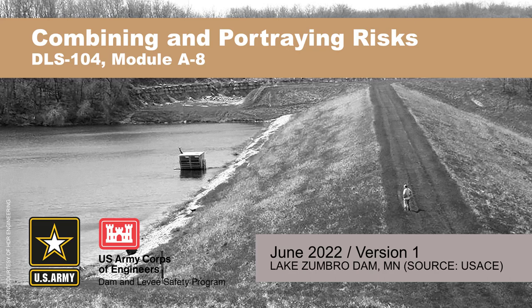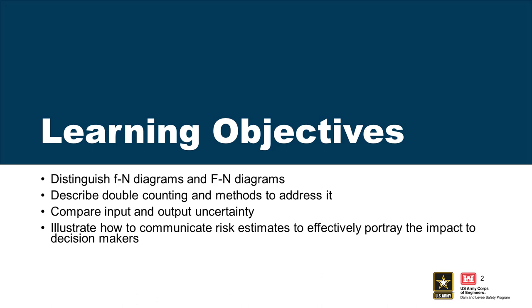The methodology and methods we use for combining and portraying our risk estimates. How do we combine multiple PFMs into a single risk estimate? The concepts covered in this module are going to be the little FN versus the big FN charts, double counting of intersections between failure mode probabilities and methods to address it, and input versus output uncertainty.